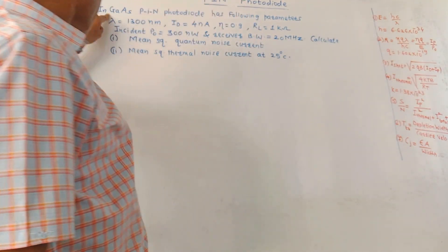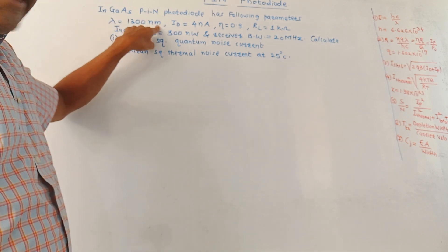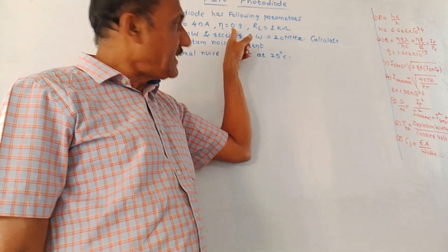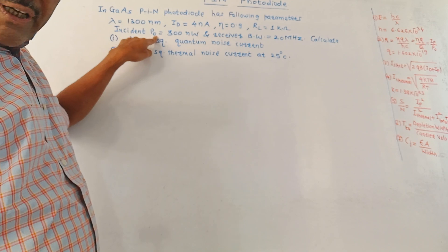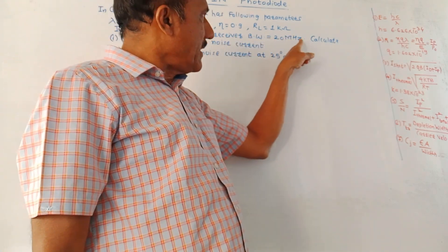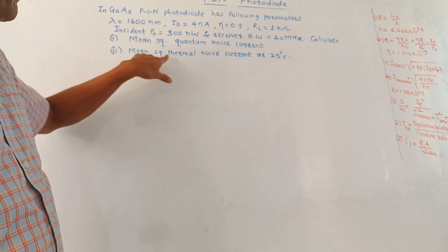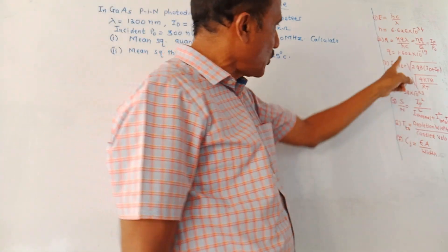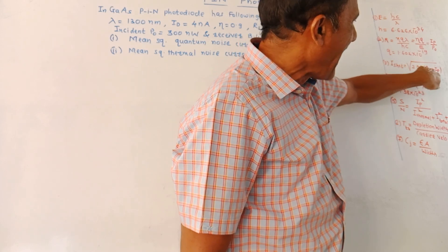Next problem: an indium gallium arsenide pin photodiode has the following parameters — wavelength λ = 1300 nm, dark current I_D = 4 nA, quantum efficiency η = 0.9, load resistance R_L = 1 kΩ, incident optical power P_0 = 300 nW, and receiver bandwidth B = 20 MHz. Calculate: (1) mean square quantum noise current, and (2) mean square thermal noise current at 25°C. The mean square quantum noise current equals the shot noise current: I_shot = √(2qB(I_D + I_P)).